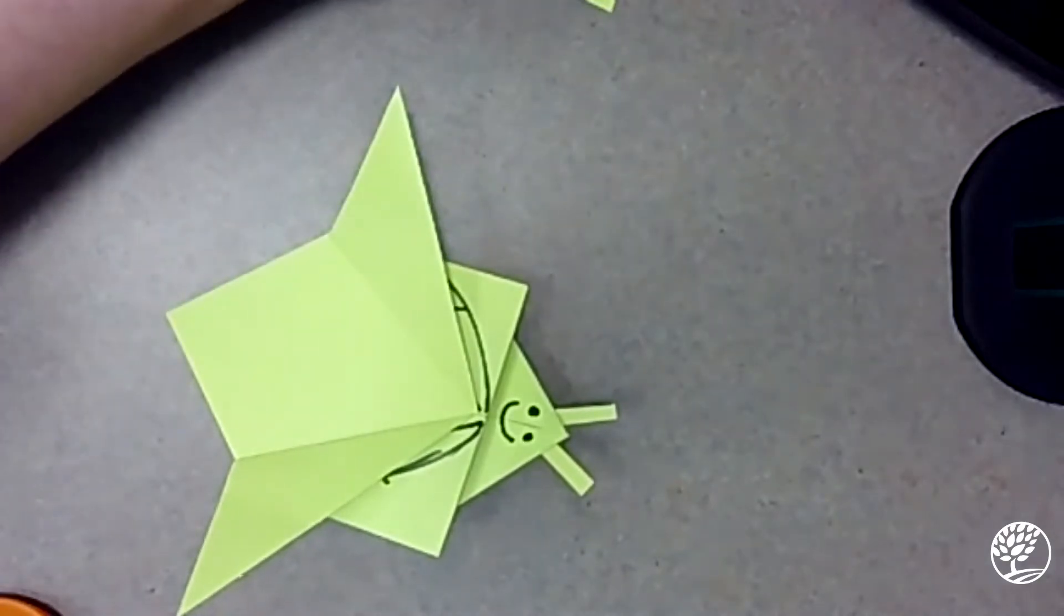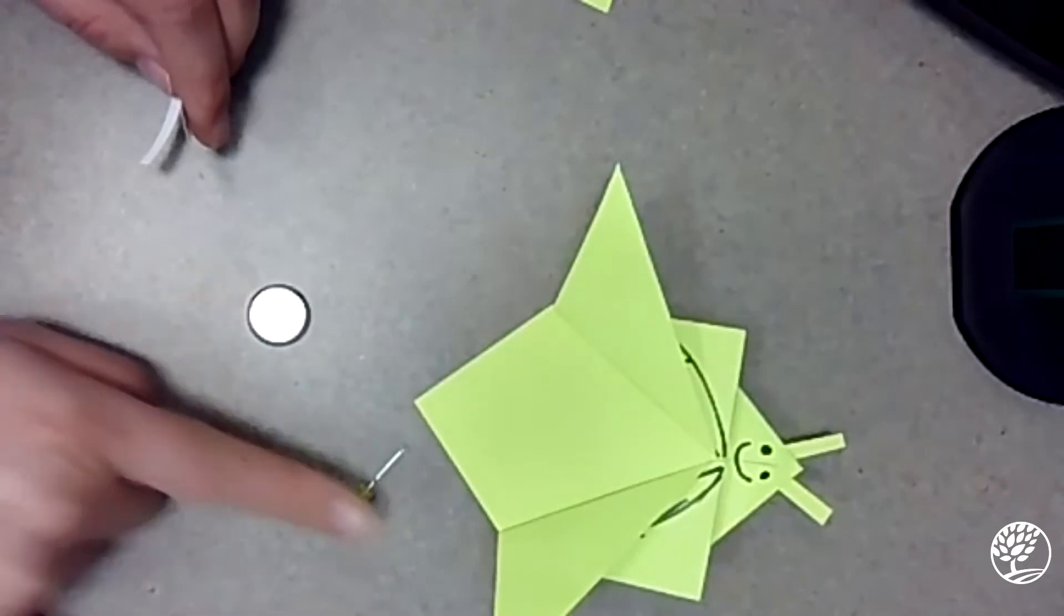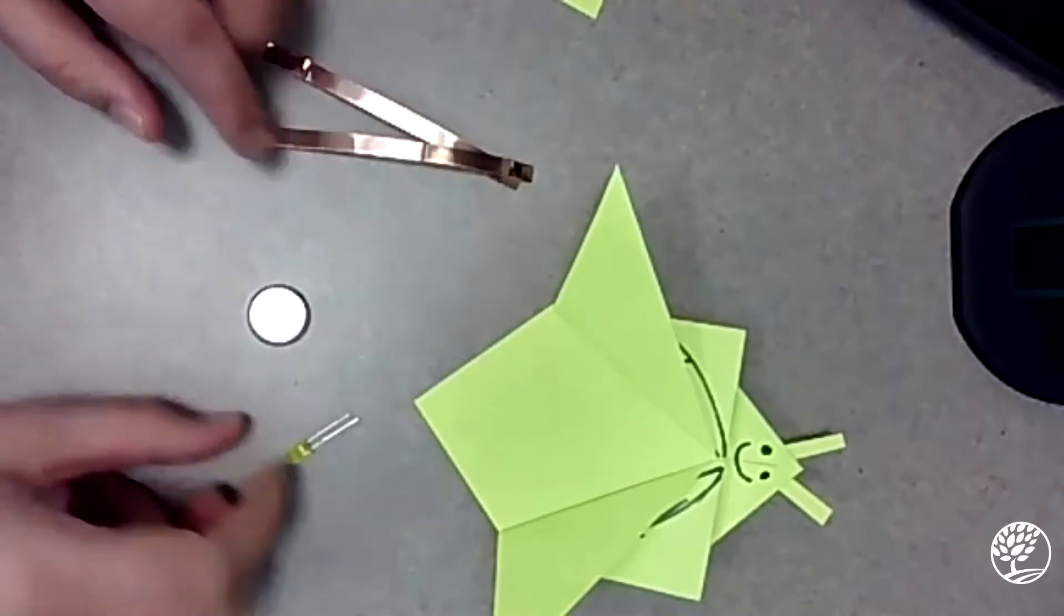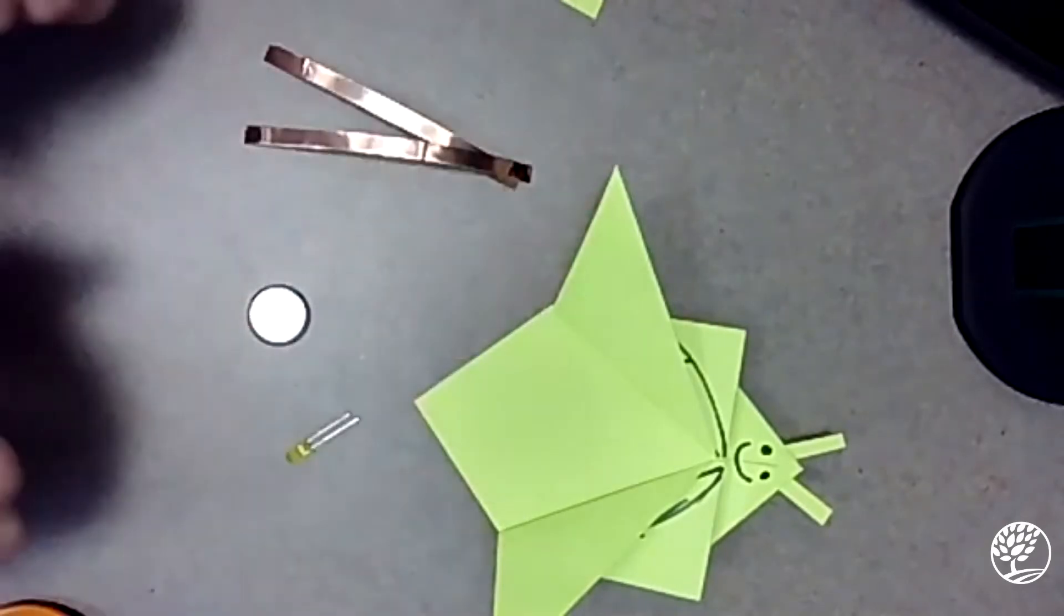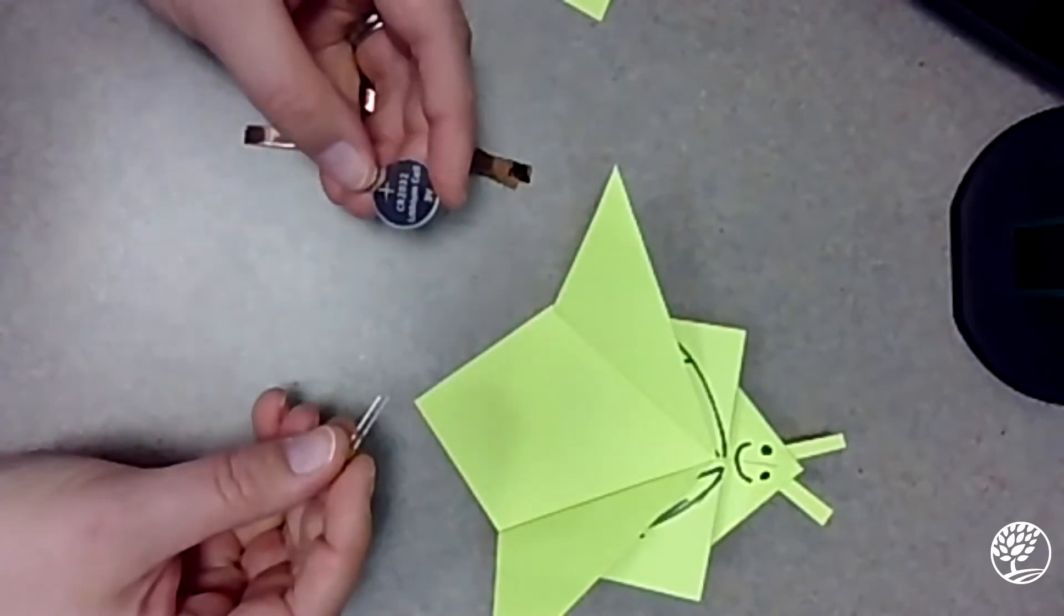So to make your paper circuit, you're going to need a coin cell battery, an LED light, and some copper tape. Before you get started with any of your paper circuit, laying this down, what you're going to want to do is test this LED light with your battery to make sure they work.